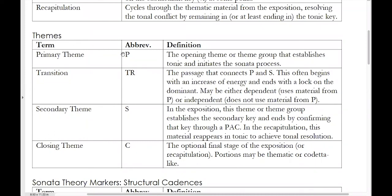The opening theme is called the primary theme, abbreviated P. The opening theme's job is to establish tonic and to initiate the sonata process — P is responsible for launching the sonata. It can be as short as a phrase, or it can be substantially longer, containing multiple phrases or even multiple themes grouped into a larger section. This is the section that will establish tonic and launch the sonata.